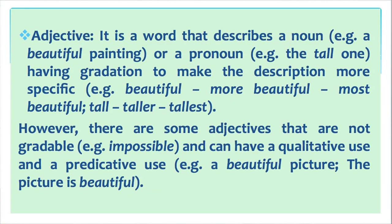Adjective: it is a word that describes a noun — for example, a beautiful painting — or a pronoun — for example, the tall one. Adjectives have gradation to make the description more specific. For example: beautiful, more beautiful, most beautiful; tall, taller, tallest.